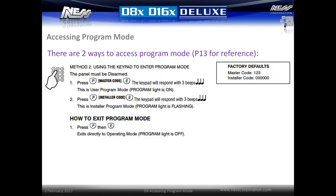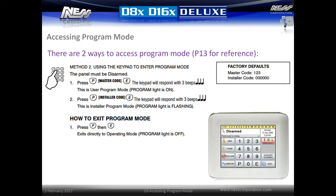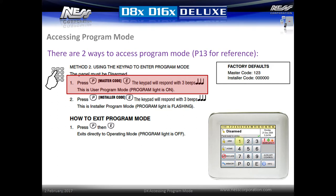The second method is using the keypad to enter program mode. All areas must be in a disarmed state. First press the P button, followed by the master user code, followed by E. By default this is P 1 2 3 E.